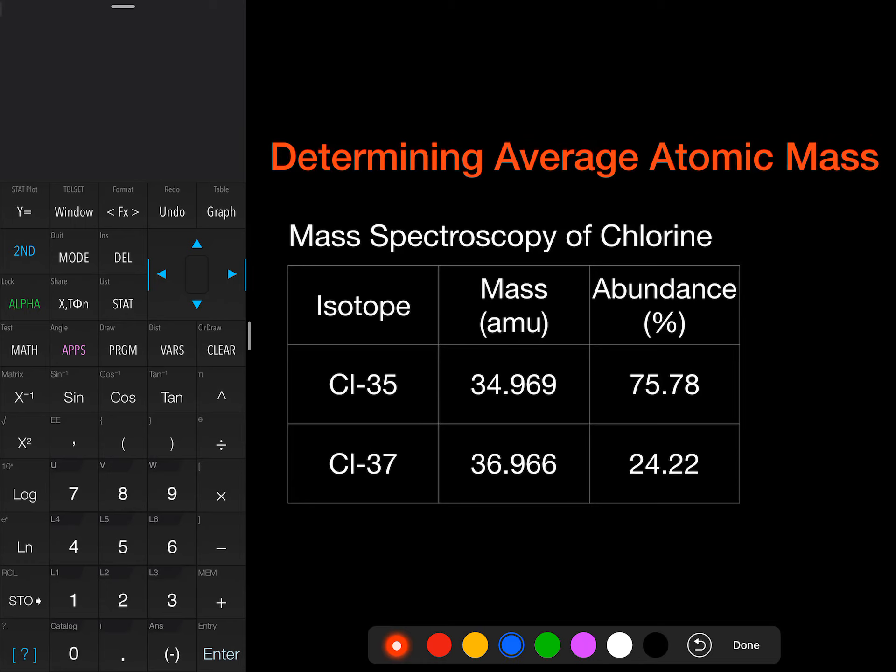We're going to take this information and multiply the mass times the abundance, but we want to change the abundance from a percent into a decimal. So I'm going to move that decimal over two places to the left for both of these.